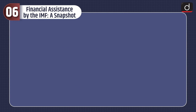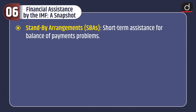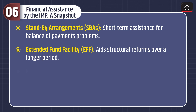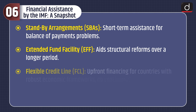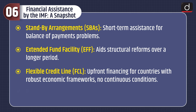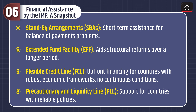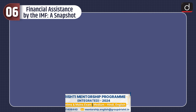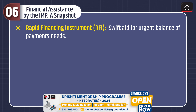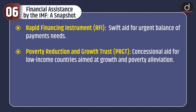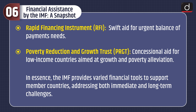Now let's discuss about the financial assistance by the IMF — a snapshot. Stand-By Arrangements provide short-term assistance for balance of payments problems. The Extended Fund Facility aids structural reforms over a longer period. The Flexible Credit Line provides upfront financing for countries with robust economic frameworks with no continuous conditions. The Precautionary and Liquidity Line supports countries with reliable policies. Rapid Financing Instruments offer swift aid for urgent balance of payments needs. The Poverty Reduction and Growth Trust provides concessional aid for low-income countries aimed at growth and poverty alleviation. In essence, the IMF provides varied financial tools to support member countries, addressing both immediate and long-term challenges.